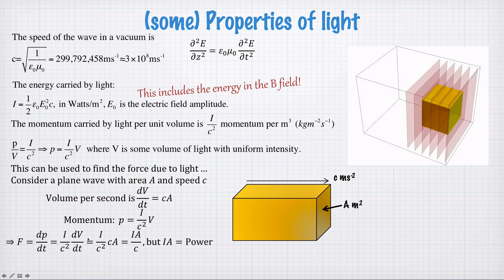What's dp/dt? Well, we can calculate it from this equation here, and we're going to get I on c squared times dV/dt. What's dV/dt? Well, we know it from this equation here. So we substitute c times A into here, and we get I on c squared times cA, which is equal to IA on c.